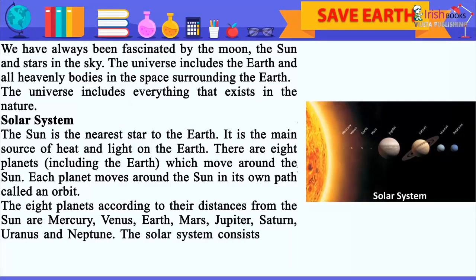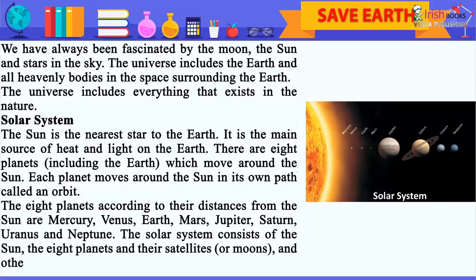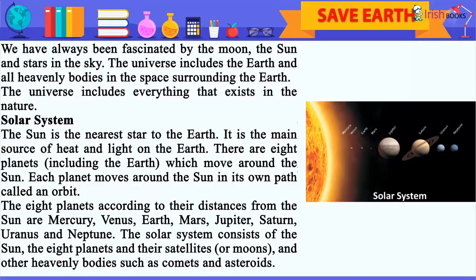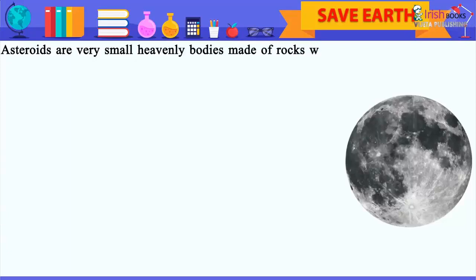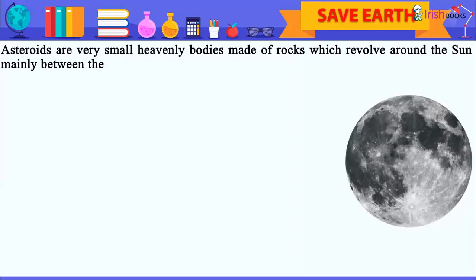Jupiter, Saturn, Uranus and Neptune. The solar system consists of the sun, the eight planets and their satellites or moons, and other heavenly bodies such as comets and asteroids. Asteroids are very small heavenly bodies made of rocks which revolve around the sun, mainly between the orbits of Mars and Jupiter.